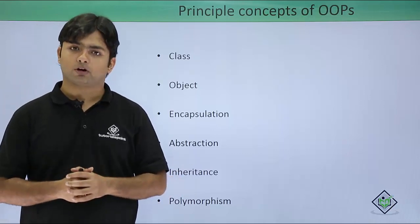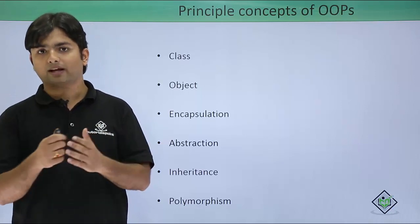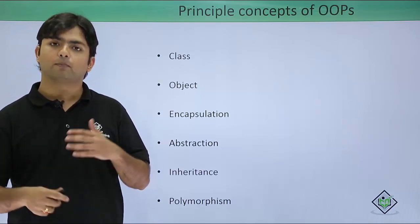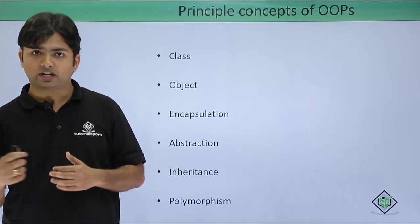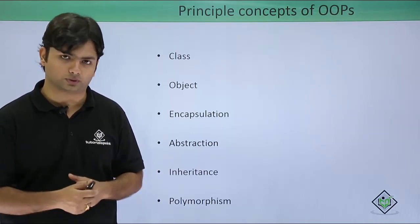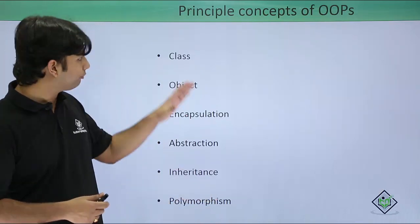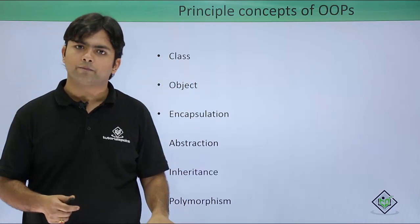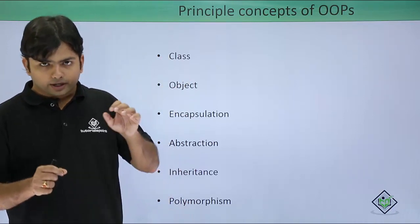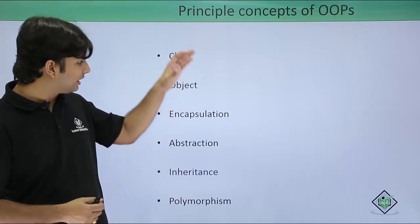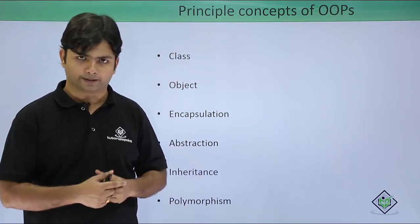And polymorphism, where one thing or one object or one method may be defined in multiple ways to do the similar task in different scenarios or in different ways as well. These are some principle concepts of object-oriented programming. Here we just saw the overview of all these. In our coming videos we will take individual concepts and we will start implementing them.